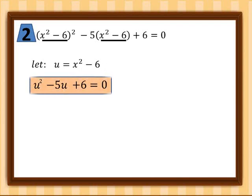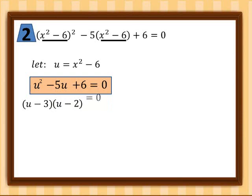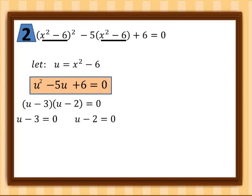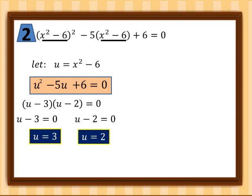After substituting, we get u squared minus five u plus six equals zero. We solve this using the factoring method. The factors are (u - 3) and (u - 2) equals zero. Equating each factor to zero gives us u equals three and u equals positive two.